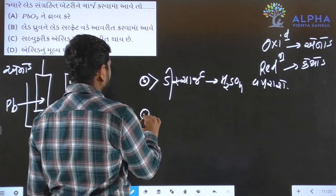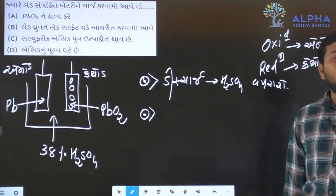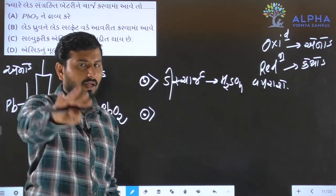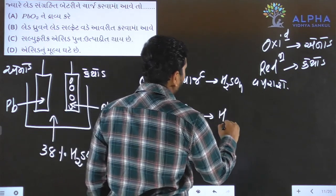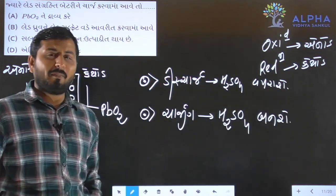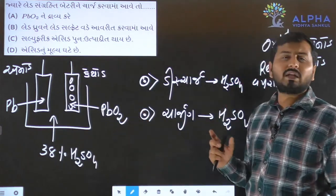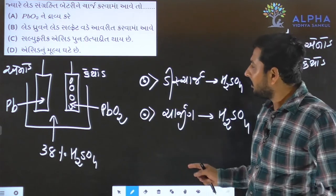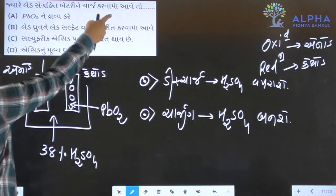જારા તમે ચારજ કર્શો ત્યારા પાછુ ફરીથી એચ્ટો એચ્ટો એચ્ટો એચ્ટો ફોર બન્શે તો ઘનાને તમ જ જારજ ની વાજ છેકરે ચારજ ની ચારજેંગ ની વાજ છેં તો છારજ કરવા માવએ તો એચ્ટો એચ્ટો ફર્બને